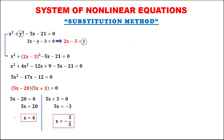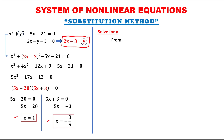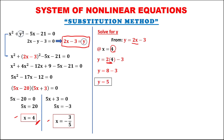So these are the two values for x. Then, we can solve for y from the equation y equals 2x minus 3. For x equals positive 4, this becomes 2 times 4, which is 8 minus 3, so therefore y is equal to positive 5 for x equals positive 4.